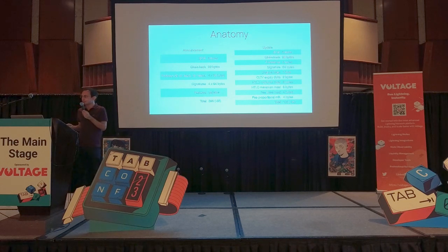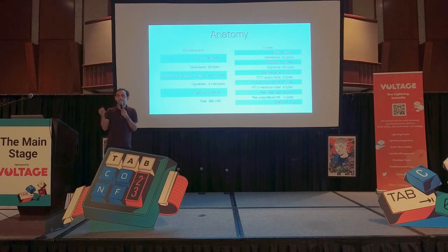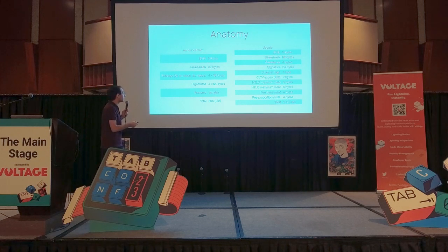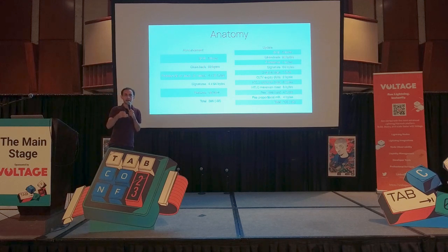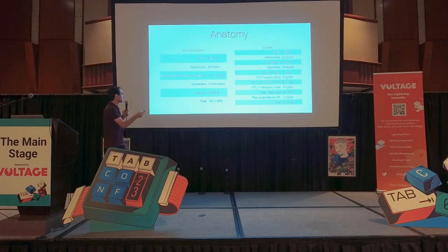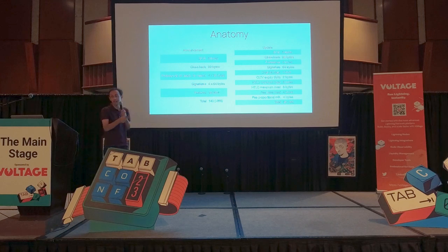We already said that because it's semi-trusted we can run our own server instance, so we might as well get rid of the signatures. The signatures are a lot of data. In the announcement, we have four times 64 bytes, because we have signatures for the on-chain data as well as signatures that prove node ownership. So let's get rid of those, and let's also get rid of the signature in the channel update. We are immediately saving 288 bytes from the chain hash in the channel announcement, and 96 bytes in the update so far.